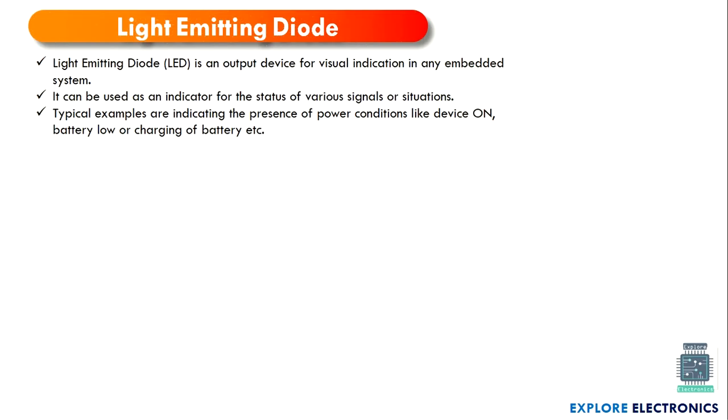First let us understand LED. LED is an output device. We use this LED to indicate some presence of action. In an embedded system, we can use this LED to indicate that the system is on — when LED is on the device is on, when LED is off the device is off. Similarly we can use this LED to indicate battery low condition, charging of the battery, etc.